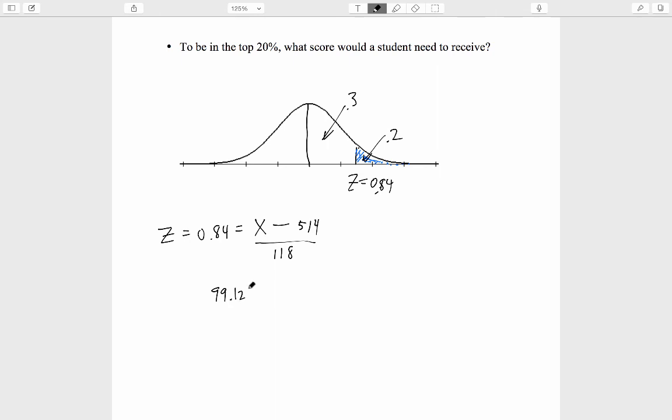We have 99.12 equals x minus 514, so that 613.12 equals x. Thus a score greater than 613.12, namely 614 or higher, will place a student into the top 20%.